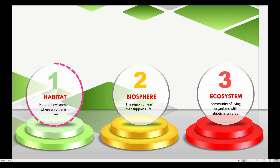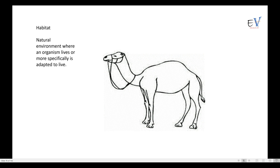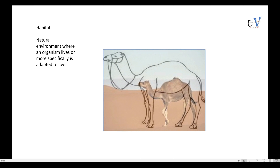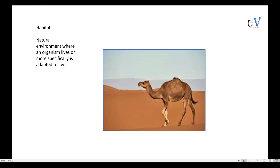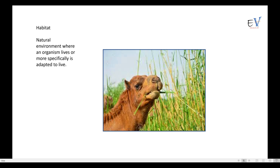First, we are going to understand what habitat is. Habitat is the natural environment where an organism lives. Now look at this camel — it is adapted to live in the desert and eat what is available there. Its body features include large flat feet, thick fur on top of the body, and thin fur elsewhere, which allows easy heat loss.